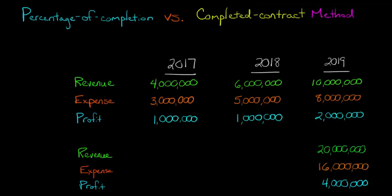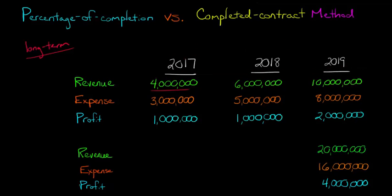In our last two videos, we talked about how to use the percentage of completion method and the completed contract method for recognizing revenue on a long-term contract. With something like a construction contract — building a bridge, which was our example — because it's long-term, you have the option of recognizing revenue throughout the periods (in our example, 2017 to 2019), or with the completed contract method, waiting until the project is completed and recognizing all the revenue in the final year.